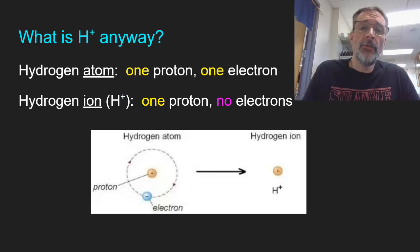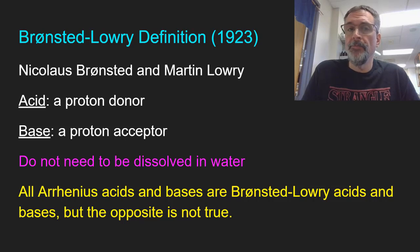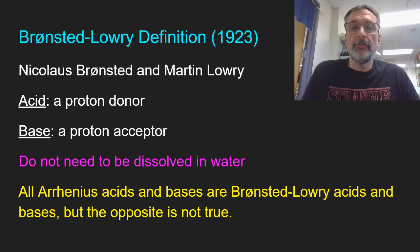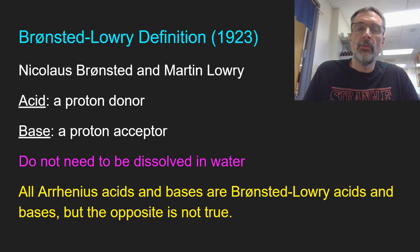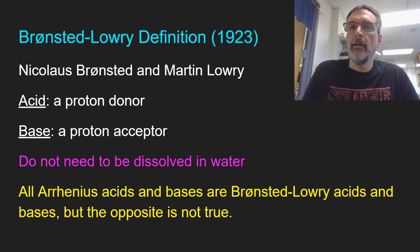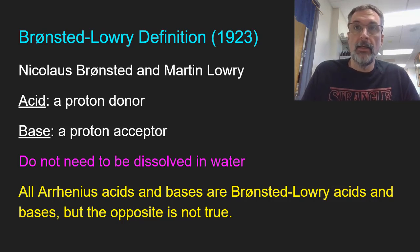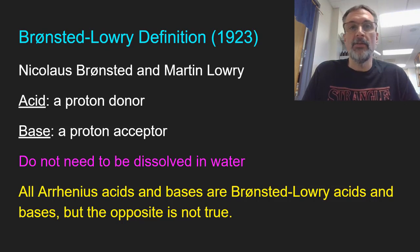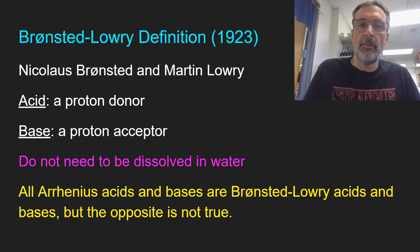Fast forward to the 1920s. Two chemists — Nicholas Bronsted, who was Danish, and Martin Lowry, who was English — redefined acids and bases with a wider definition that could include compounds that didn't necessarily fit Arrhenius's definition but were experimentally determined to be acids or bases. Bronsted and Lowry said that an acid was anything that could donate a proton — since H+ is a proton, anything that could give up H+. That sounds like Arrhenius, just slightly different wording, but an important difference is coming.